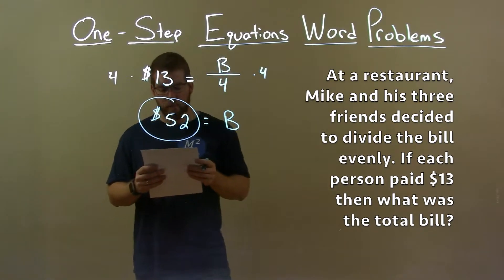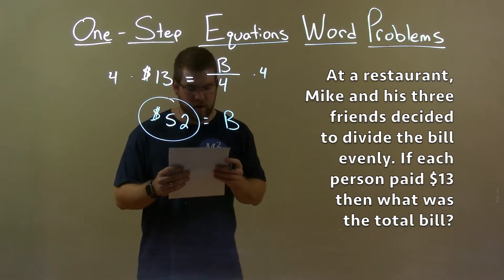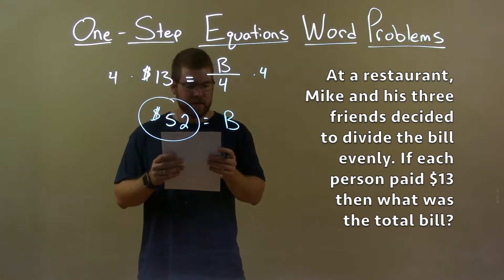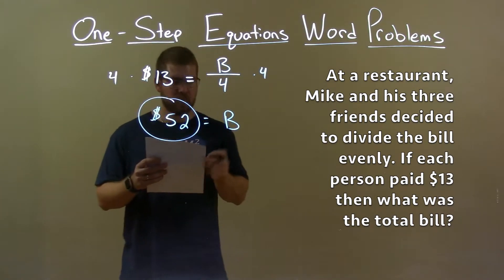Quick recap, we're given the problem at a restaurant Mike and his three friends decided to divide the bill evenly. If each person paid thirteen dollars, what was the total bill?